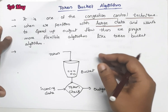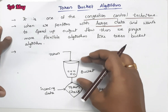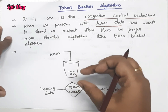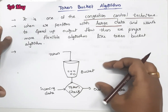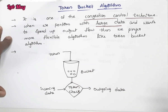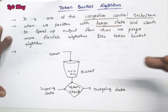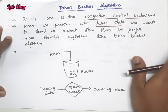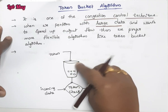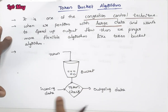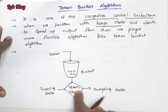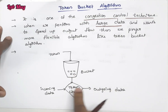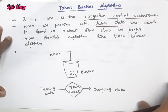When we need to access data, we first access the tokens. If a token is available for the packet, the packet proceeds as outgoing data. If no token is available, the packet is stopped. So the process is: incoming data arrives, we check the token, if token is present the packet becomes outgoing data, otherwise the packet is stopped.